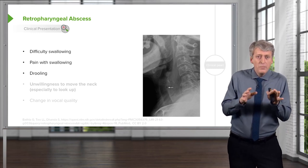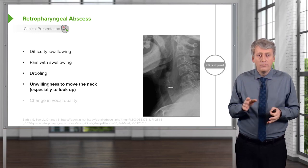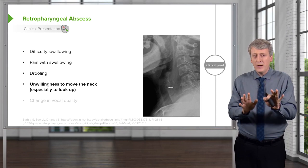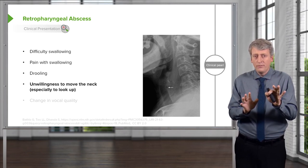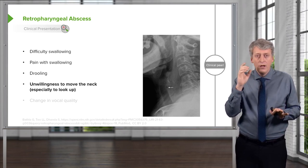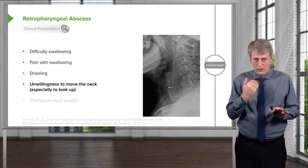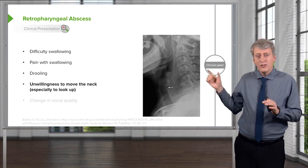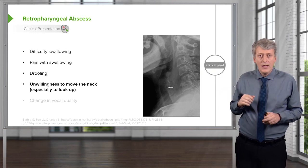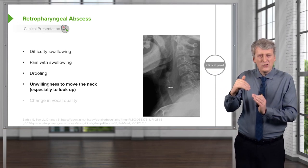They will be unwilling to move their neck, and in particular unwilling to look up. A useful comparison: in peritonsillar abscess, they don't want to open their mouth; in retropharyngeal abscess, they don't want to look up; in meningitis, they don't want to look down. They don't want to look up because they have inflammation in front of the cervical vertebrae — stretching that tissue hurts.